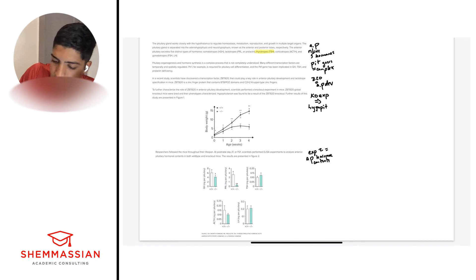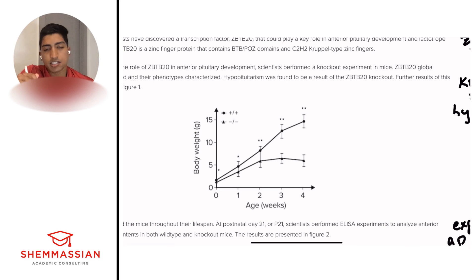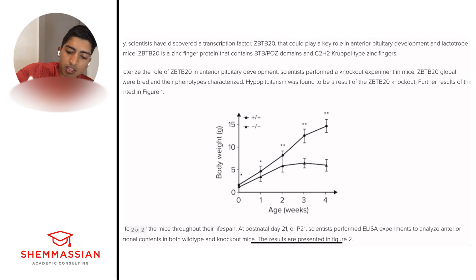Let's go on to question two. Abnormal levels of which hormone most likely explains the results shown in figure one? A: ACTH, B: prolactin, C: TSH, and D: HGH. This is a question where it really tells us where we have to go back to, and we have to go back to figure one. So we're looking for what's significantly different between this knockout mouse group and this normal group. And so if we look at the passage itself, it says hypopituitarism was found to be a result of the ZBTB20 knockout. So that's less hormones. Hypo means less, less hormones secreted from the pituitary. And so we are seeing what? We have age and we have body weight. Independent variable is age, dependent is body weight.